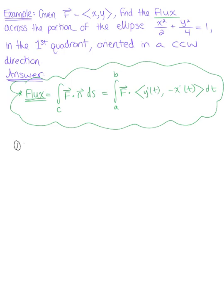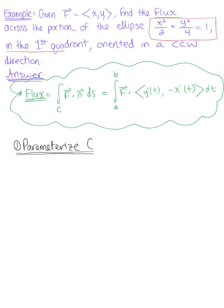The first thing we want to do is parameterize the curve. Here we are not given a parameterized curve — we are simply given an ellipse in the first quadrant oriented in a counterclockwise, or positive, direction. If we're given an ellipse, we'll do it in general form first: for a Cartesian ellipse x²/a² + y²/b² = 1, the corresponding parametric equations